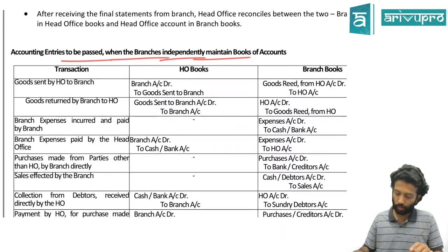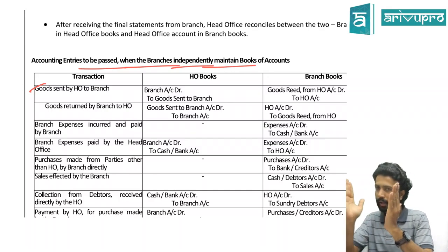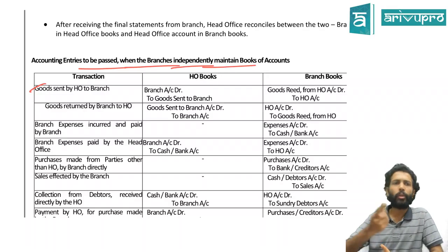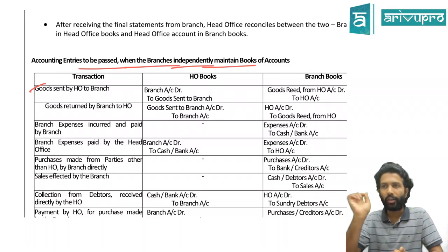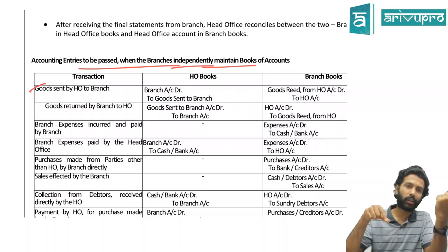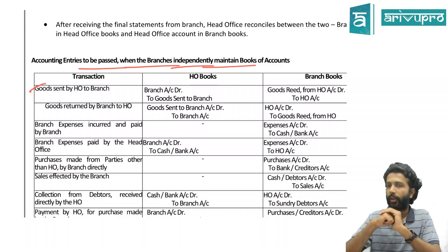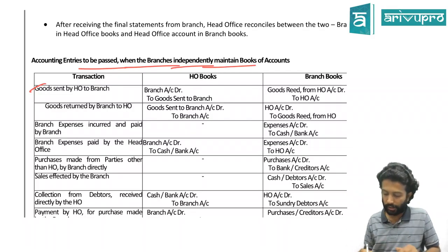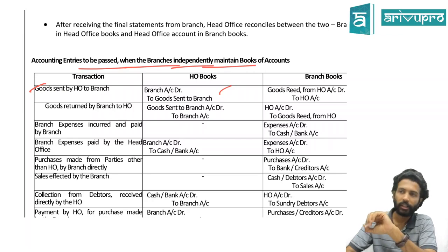First transaction: goods sent by HO to the branch. For HO books, it is similar to a credit sale. The normal entry for credit sale is debtors debit to sales, but since the branch is not an outsider, instead of debtors we debit branch account. Also, we cannot call it a sale because the goods are moving within the organization, so we call it 'goods sent to branch.' The journal entry is: Branch Account debit to Goods Sent to Branch Account.